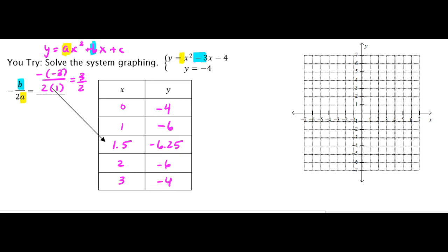Now all we have to do is plot these numbers, or plot these points. So 0, negative 4 would be right here. 1, negative 6. 1 and a half, and then negative 6.25 would be kind of in the middle of the box.